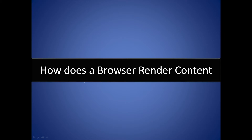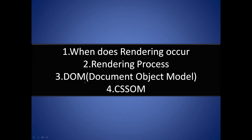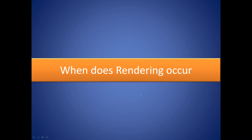Hello everybody, this is Joshua and I'm back with another video. In this video we're going to see how a browser renders content. These are the four topics we're going to be covering today: when does rendering occur, the rendering process, the DOM which is the Document Object Model, and the CSSOM. Now let's start with the first one — when does rendering occur?